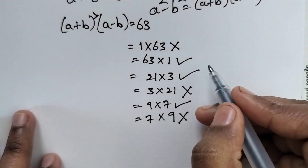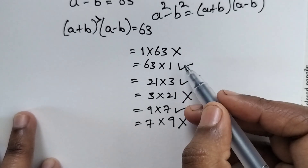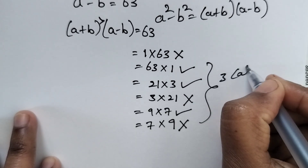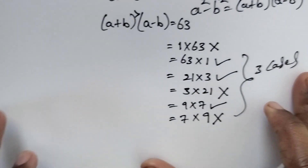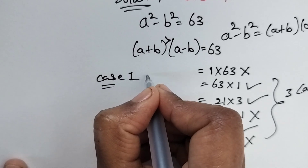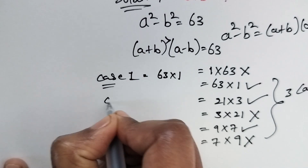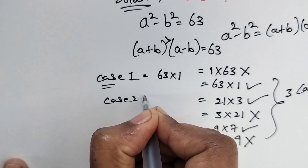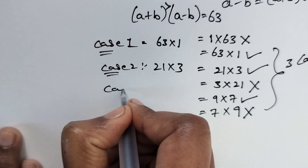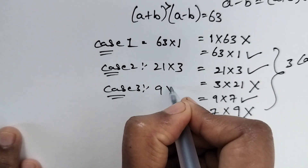So how many valid cases do we have? We have 3 cases. Case 1: 63 times 1. Case 2: 21 times 3. Case 3: 9 times 7.